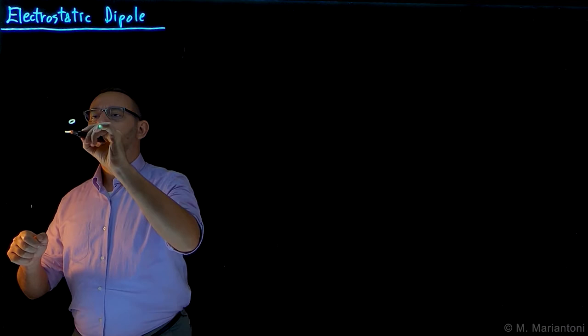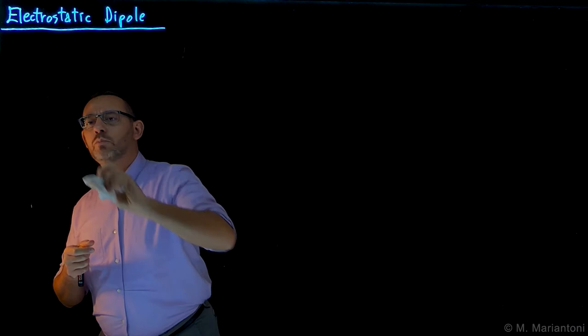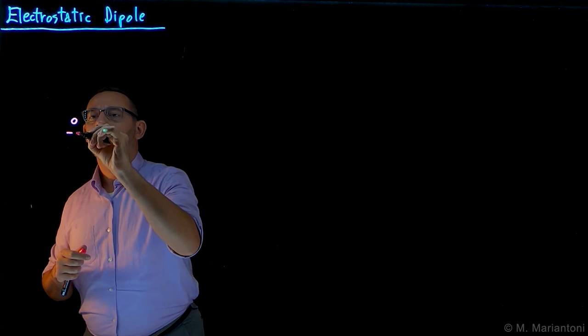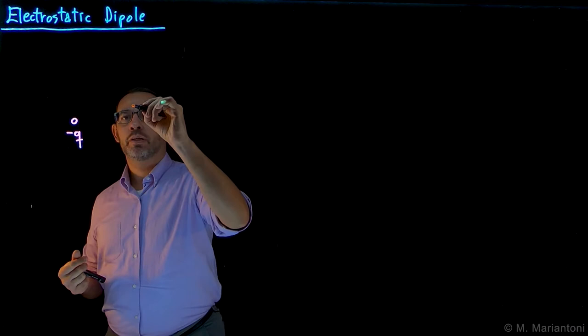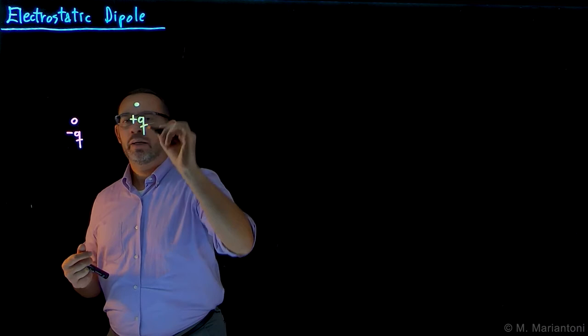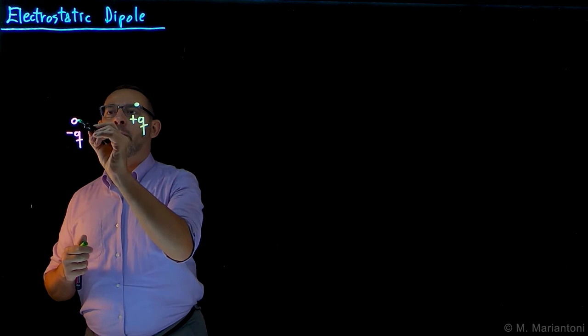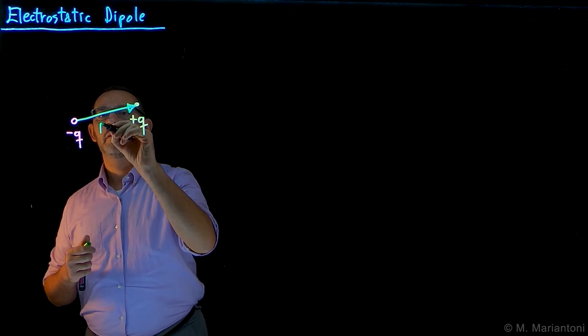Let's re-sketch it here. So this is the negative particle, let's do it in red as always — the negative one, minus q, right here. And at a certain distance, let's call it capital D — not to get confused with differentials — we're going to have a positive charge, plus q, here. The distance between these two charges, let us call it vector capital D.